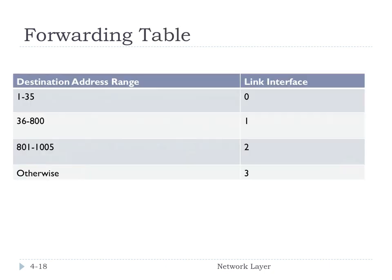What if we could put ranges and say: addresses 1 to 35 go to link interface 0, 36 to 800 go to another, and so on? If we did that, then all we'd have to remember is 35, 800, and 1,005. We know as long as it's that number or less, go to that interface. So we've cut our 4 billion entries down to basically 3 because we've got an otherwise clause — if it's anything larger than 1,005, go to interface 3. This looks like a viable solution — much more compact.